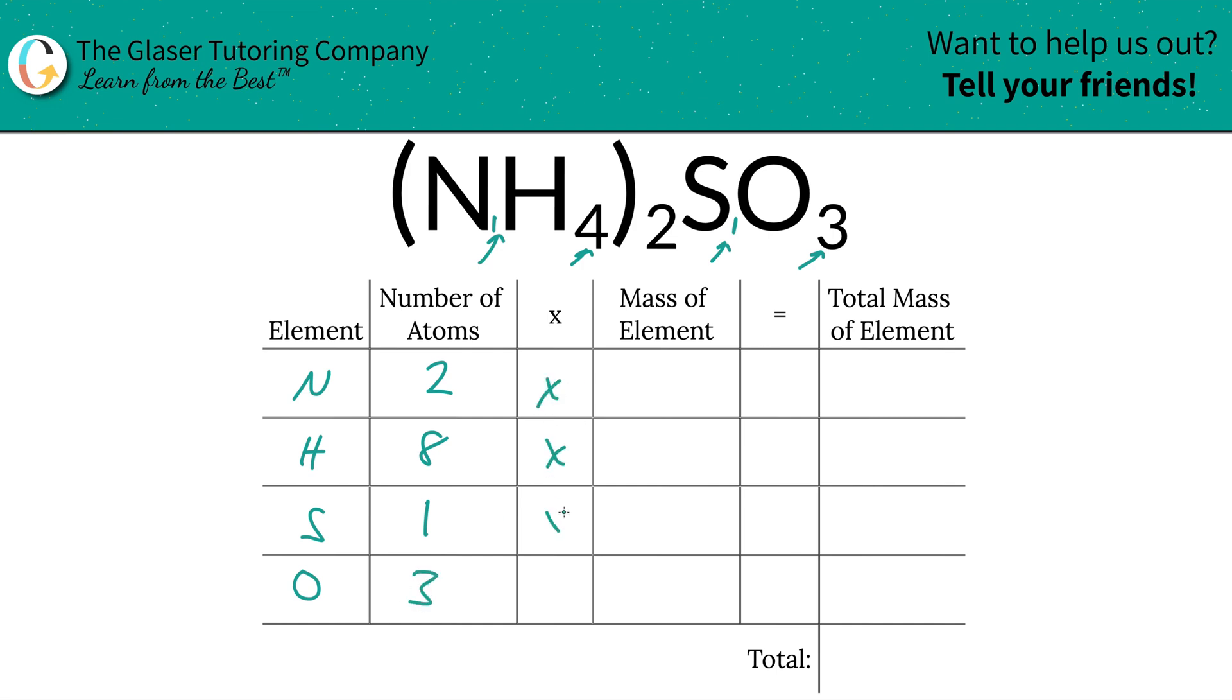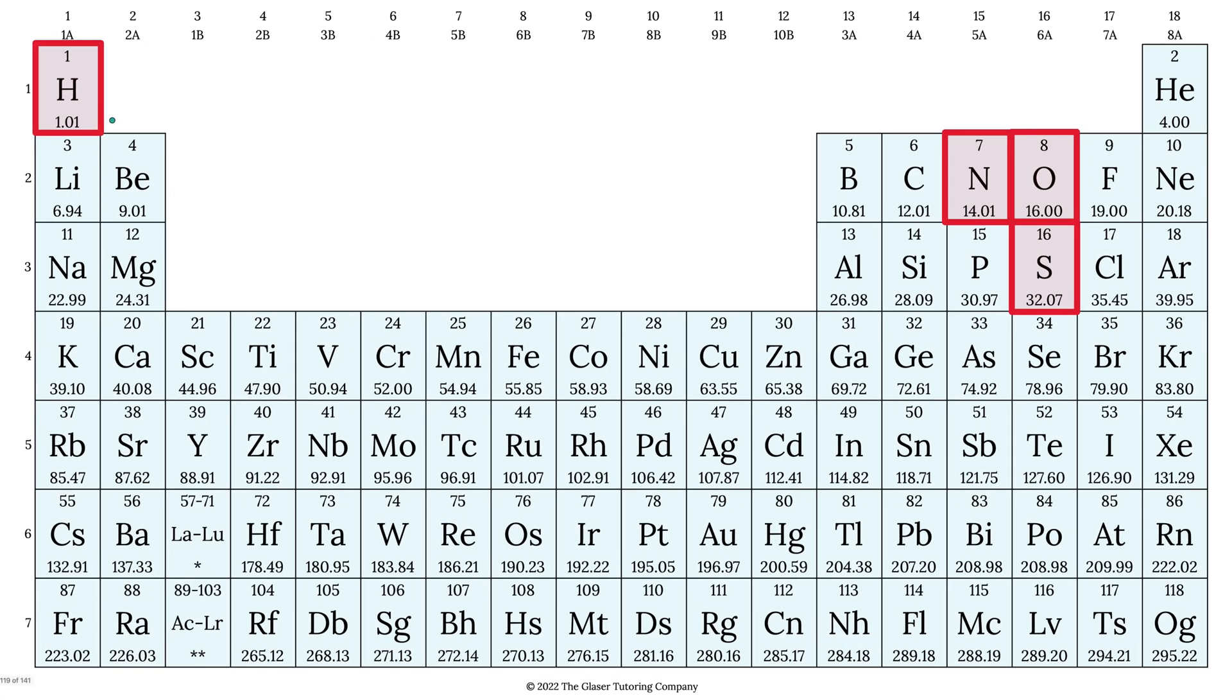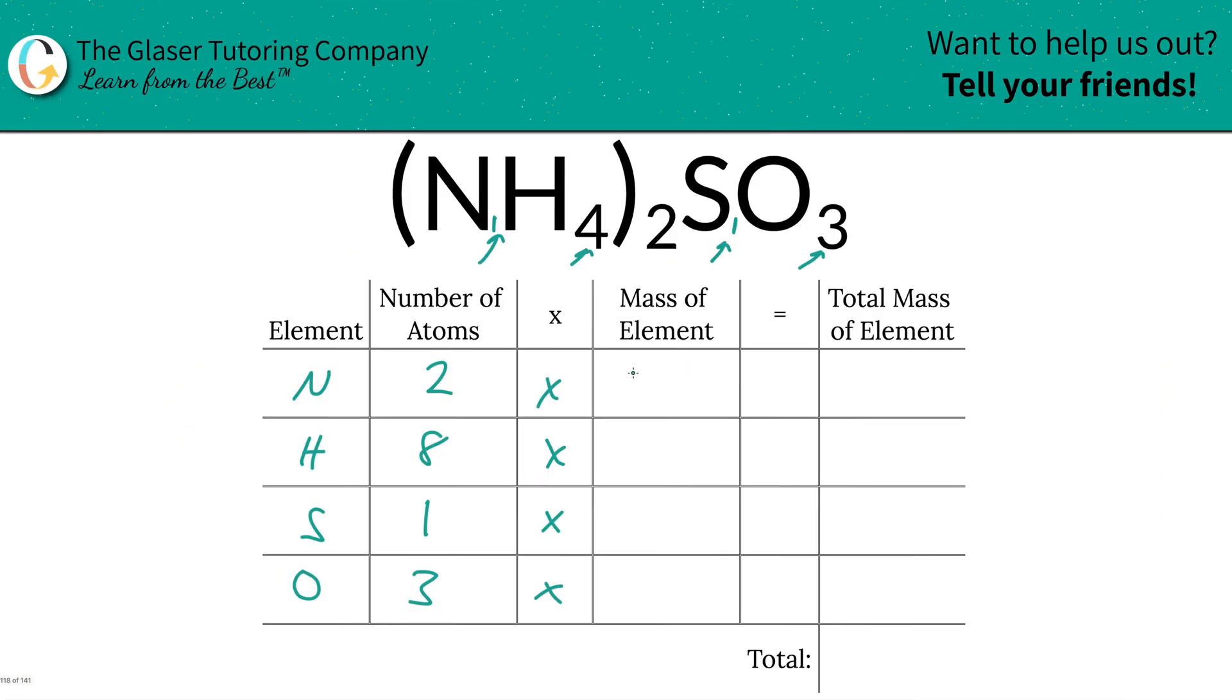And then we're simply going to take those number of atoms and multiply by the mass of each element. Periodic table. So the masses here are 1.01 for hydrogen, 14.01 for nitrogen, oxygen is 16, and sulfur is going to be 32.07. So that's what we're going to write down, 14.01, 1.01, 32.07, and 16.